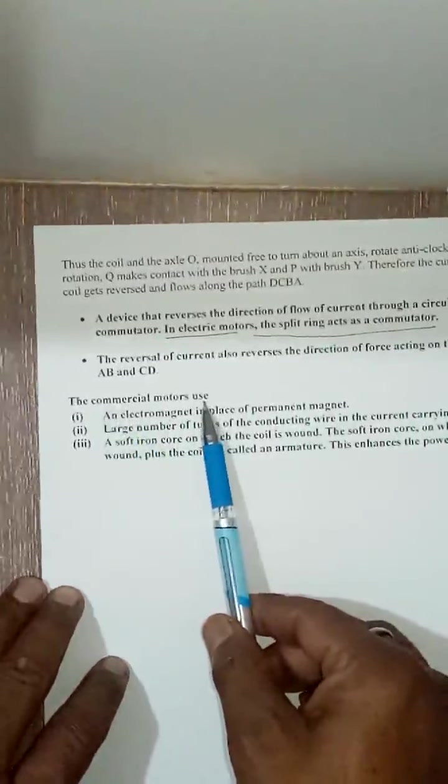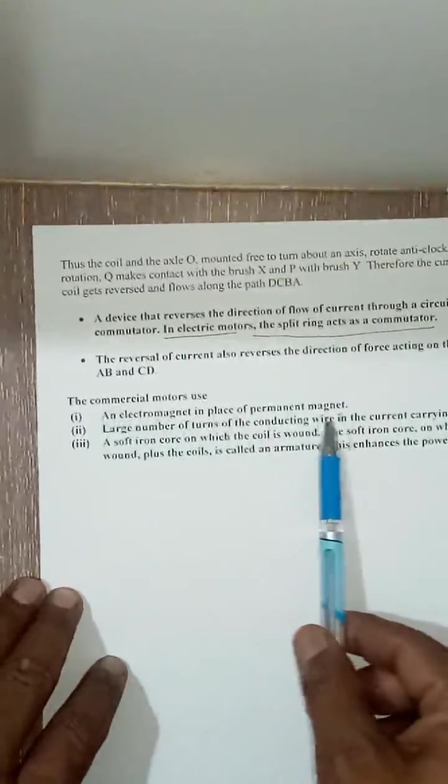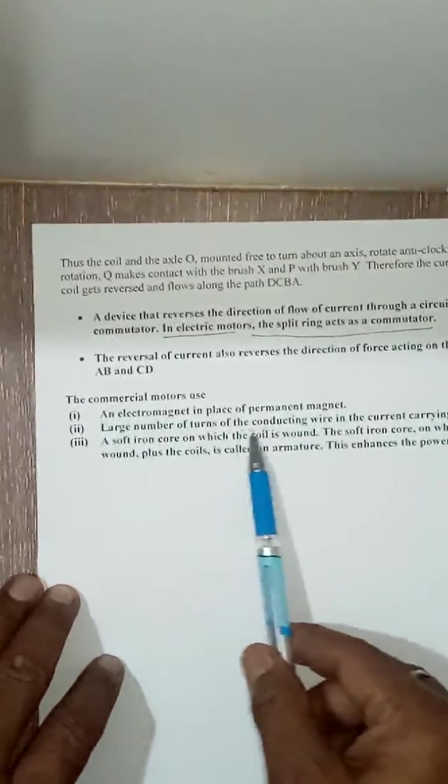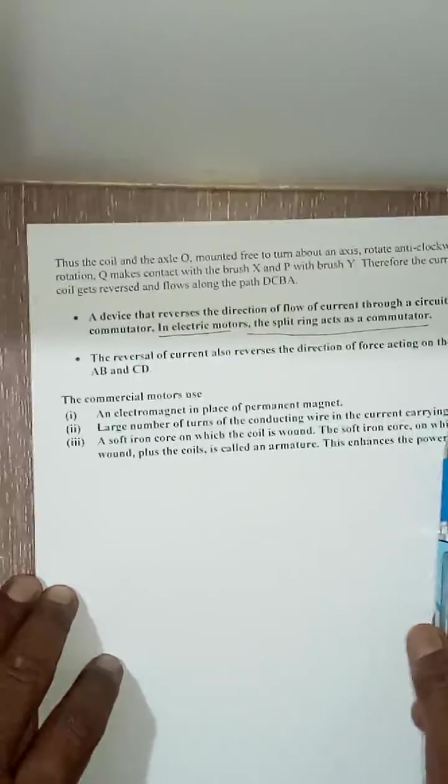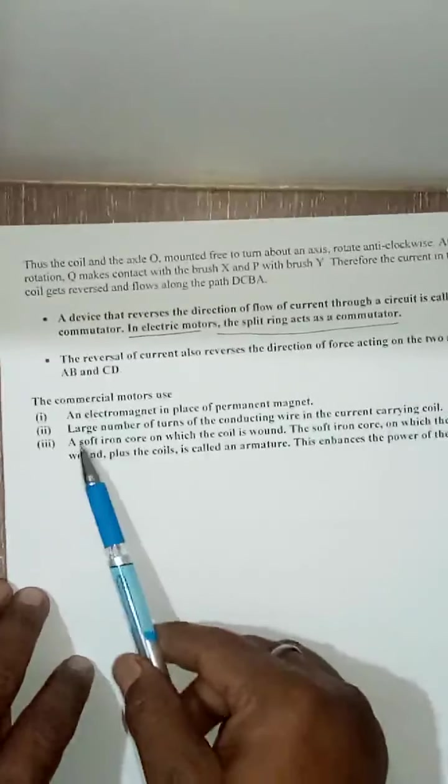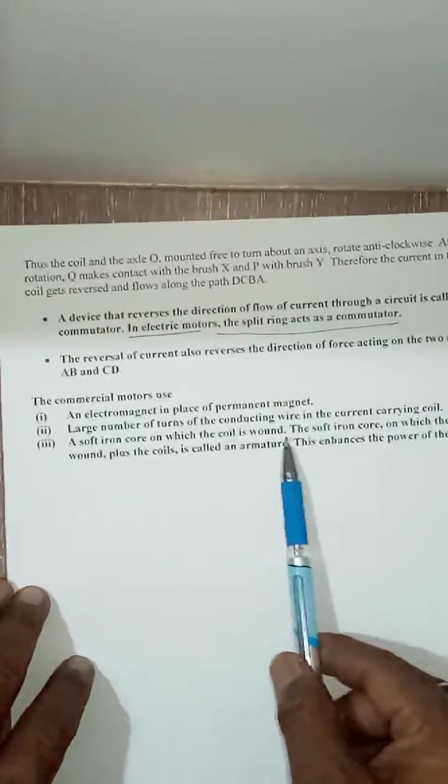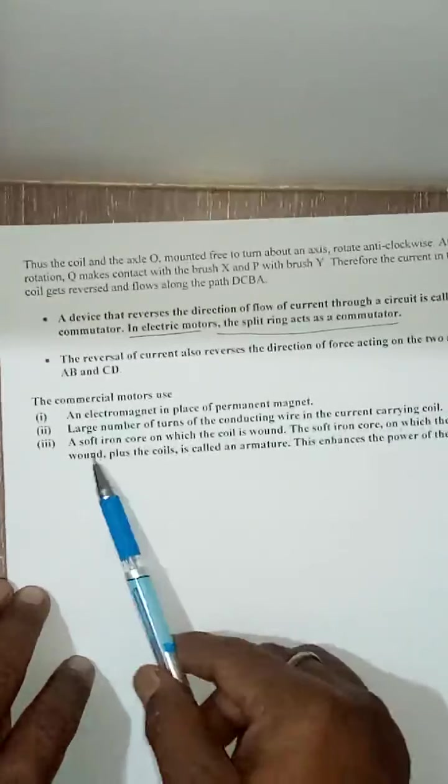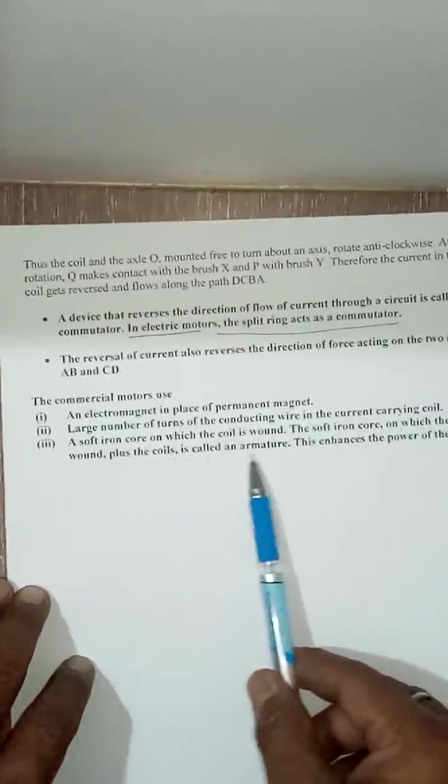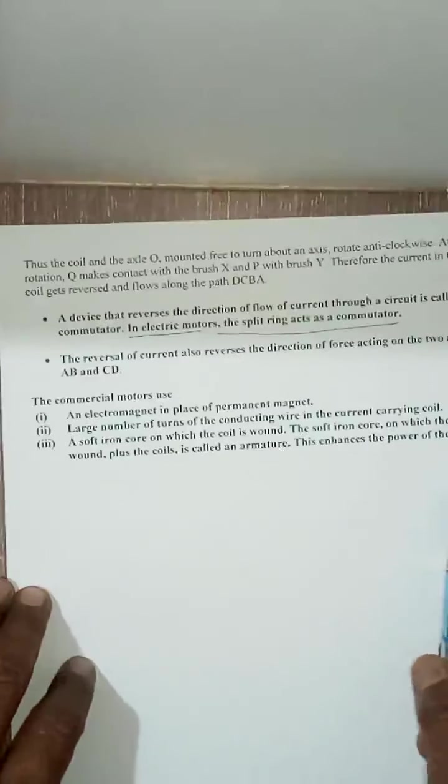Commercial motors use an electromagnet in place of permanent magnet, large number of turns of the conducting wire in the current carrying coil, a soft iron core on which the coil is wound. The coil is called an armature. This enhances the power of motor.